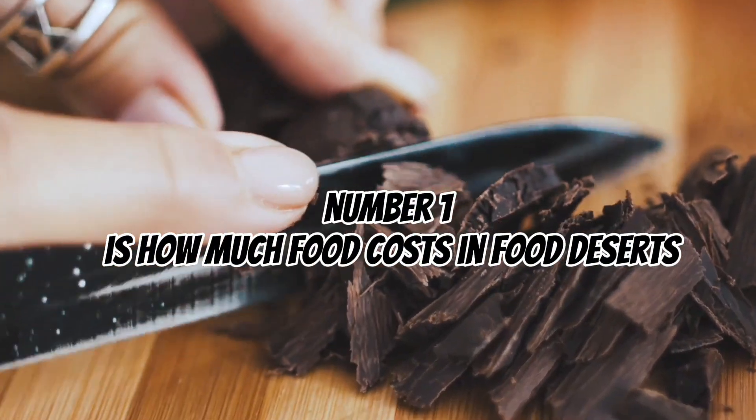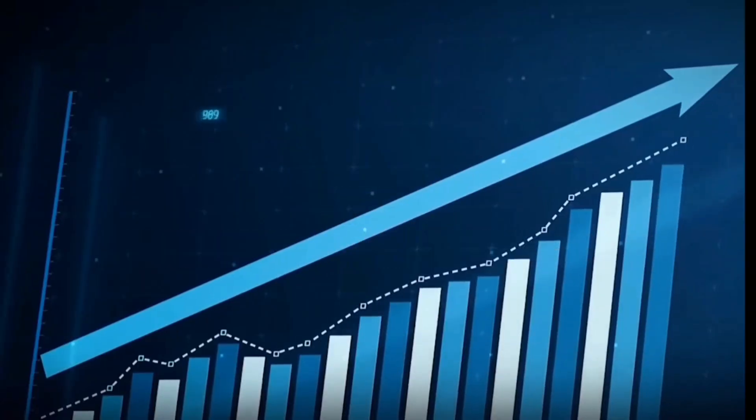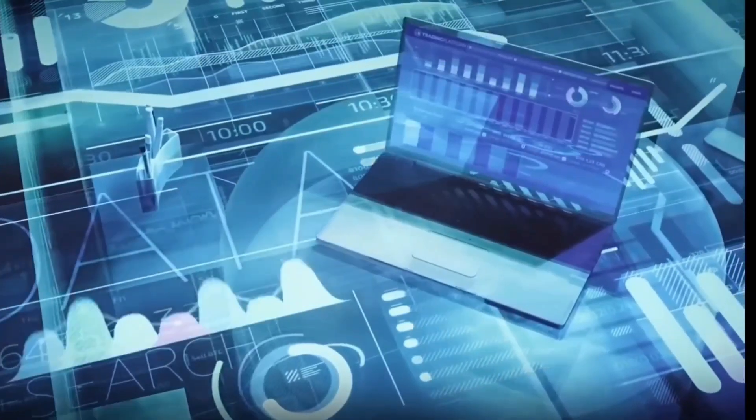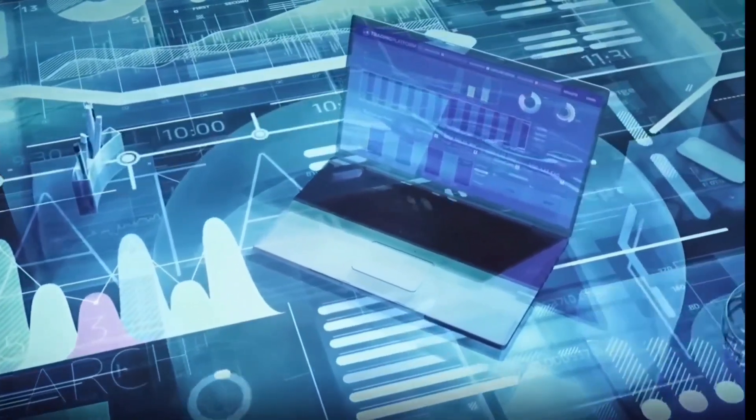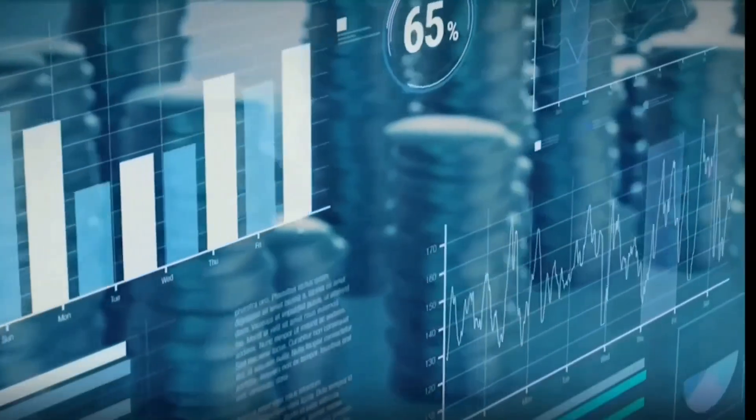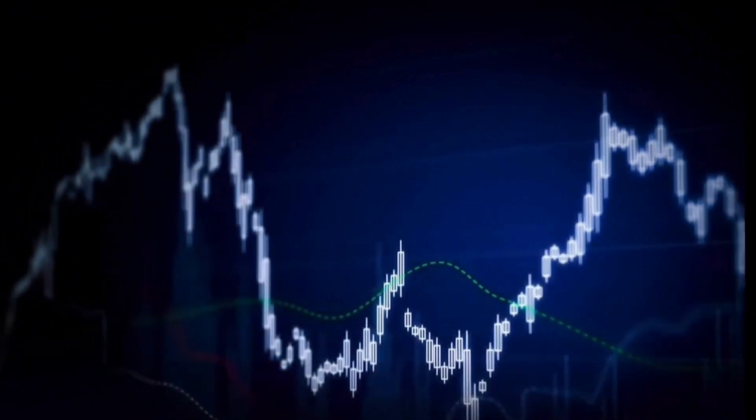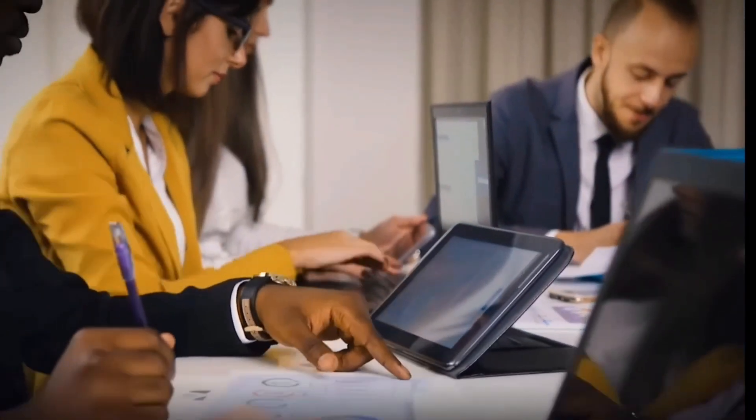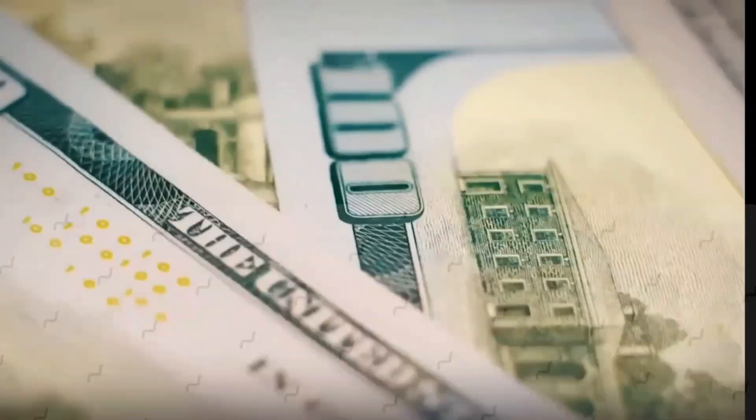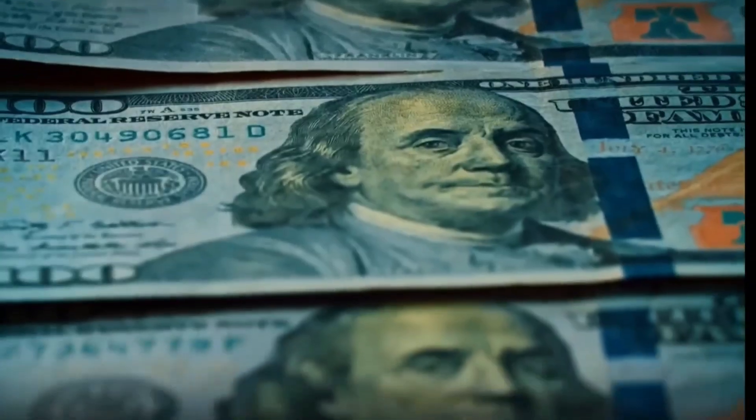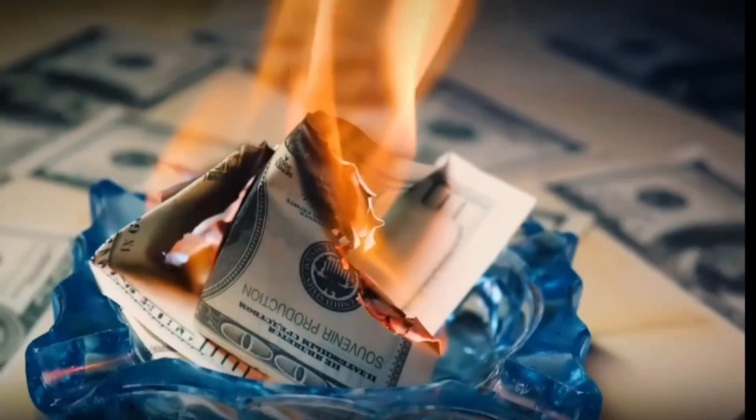Number one is how much food costs in food deserts. Food is one of the main expenses that disproportionately affects the underprivileged. Prices in small and major retailers differ by as much as 30 to 50 percent. Smaller retailers, which are frequently the only choice in impoverished areas, have much higher prices than chains like Costco or Trader Joe's. When there are no reasonably priced grocery stores within easy commute, a situation known as a food desert develops, driving locals to purchase at more costly establishments.